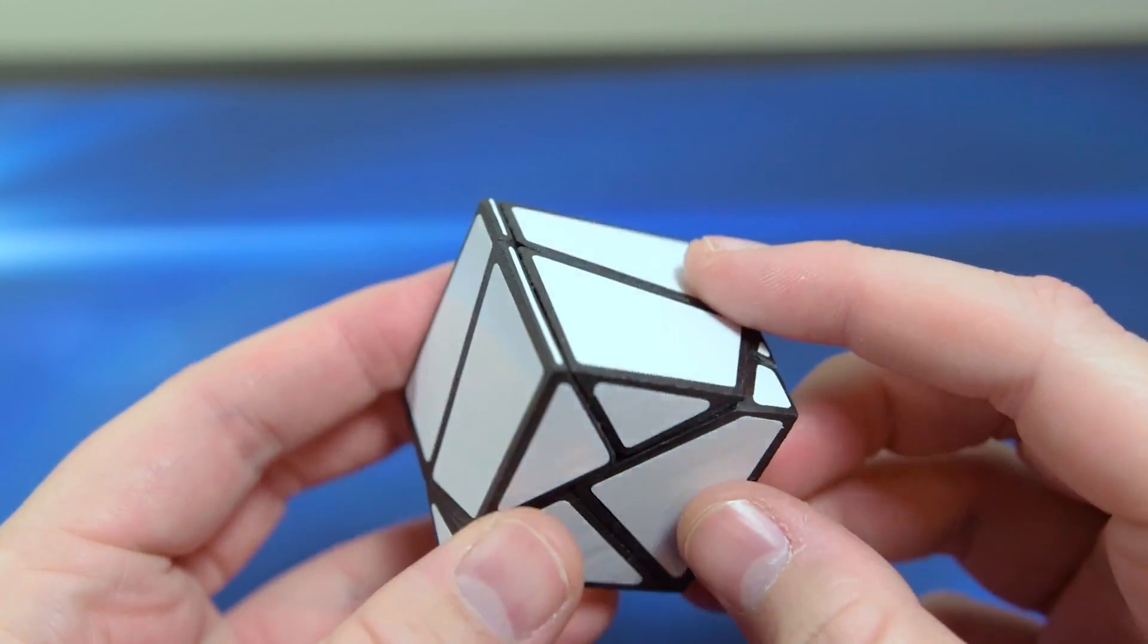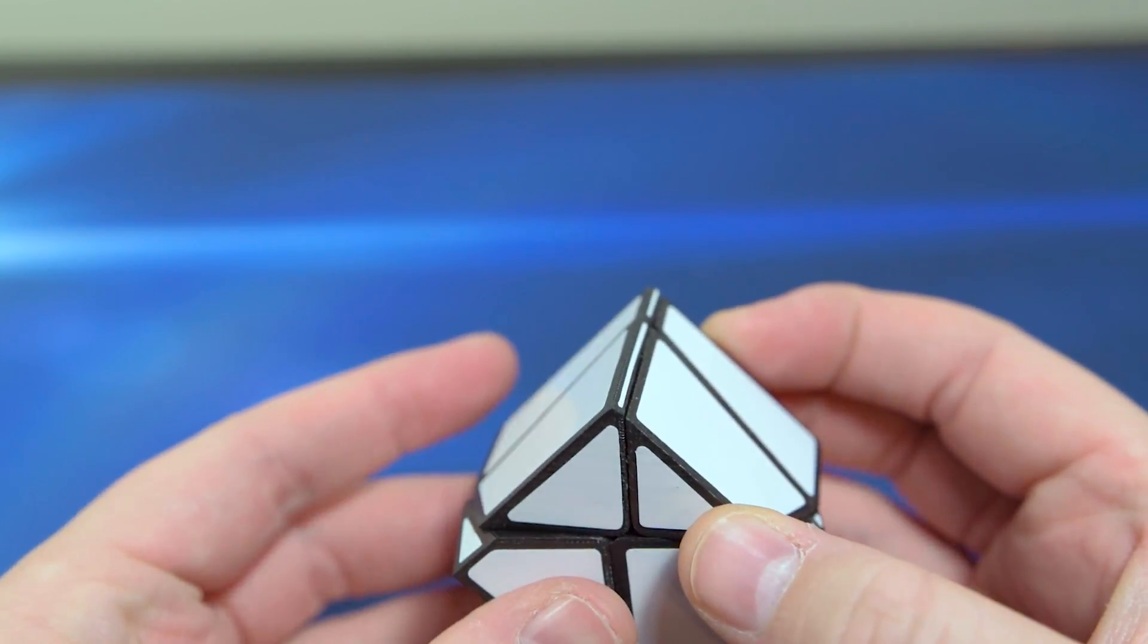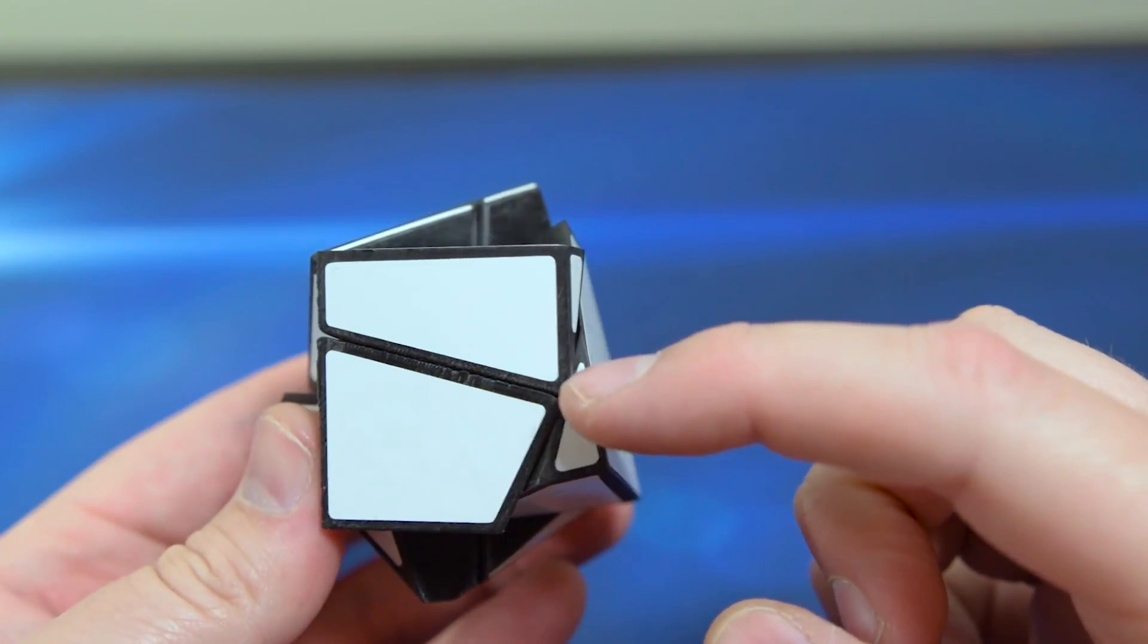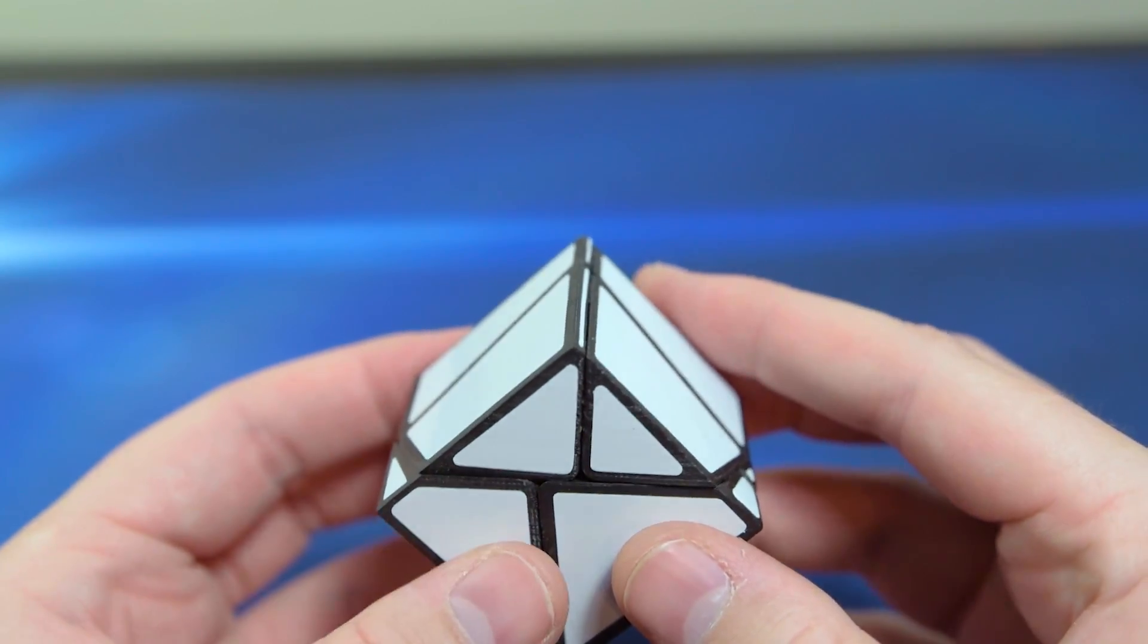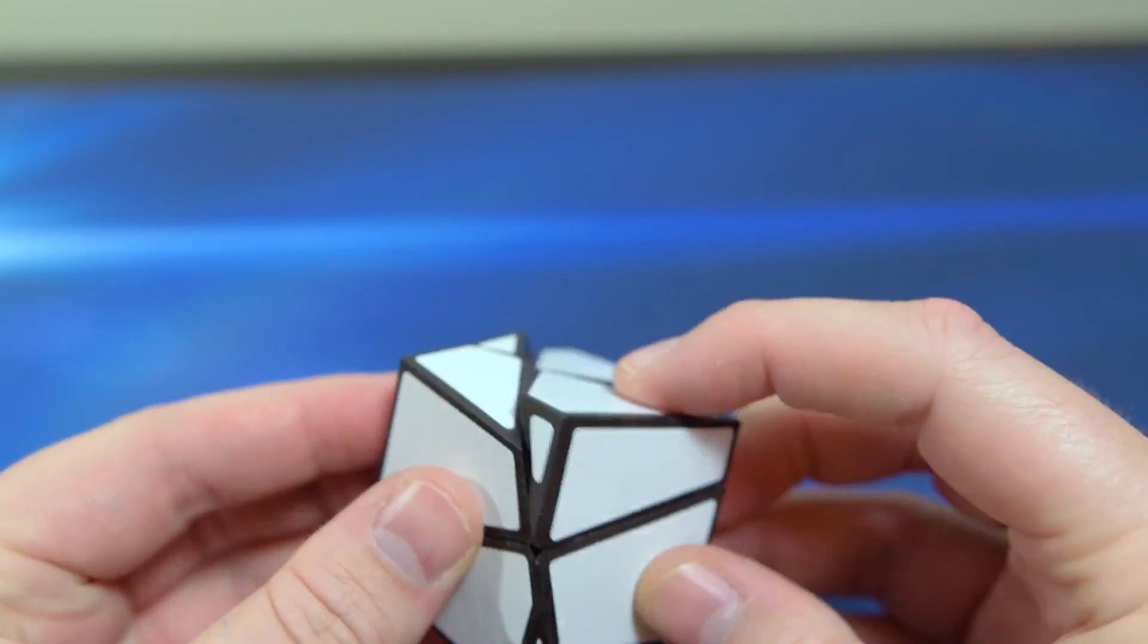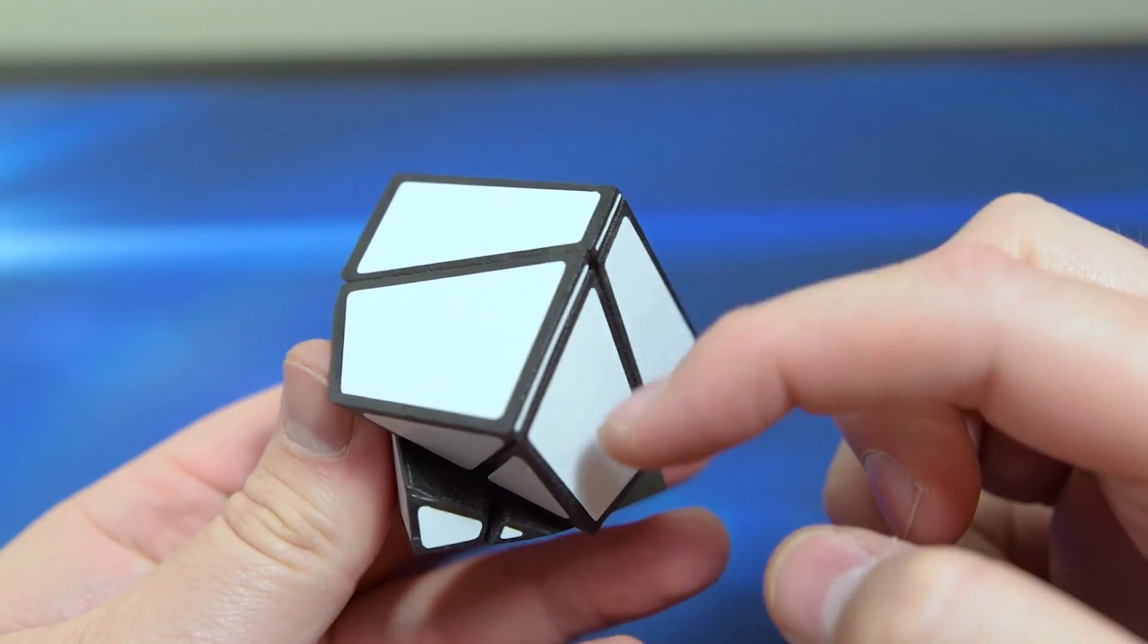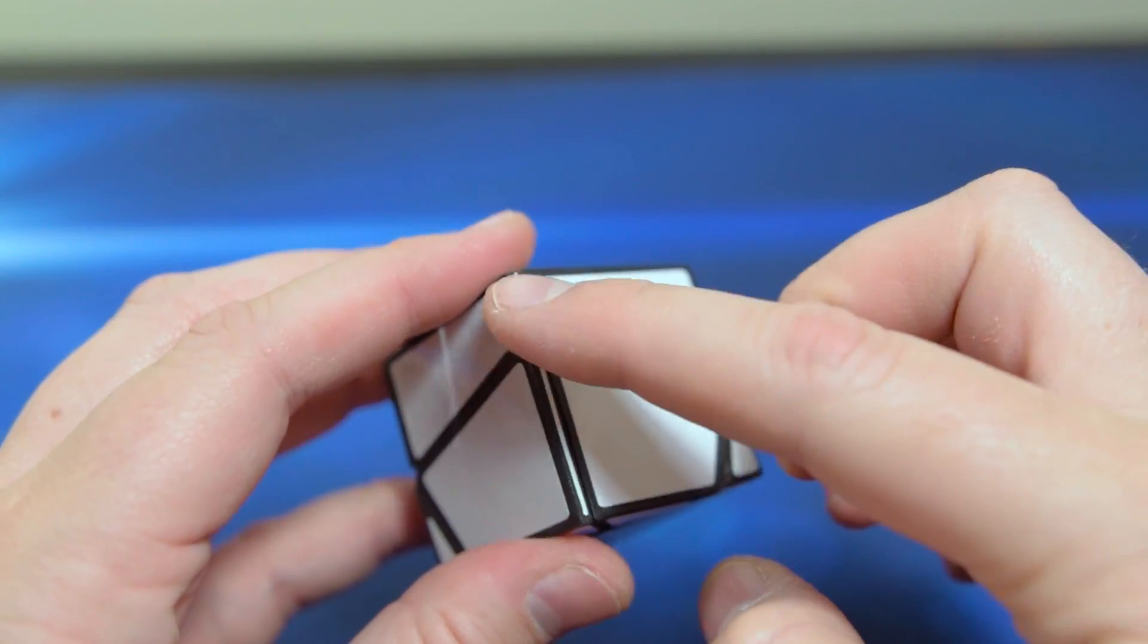Before we do some turns, let's take a look and see how we're going to solve it. I don't want to get caught solving this side because it doesn't really line up when it's solved. I want to solve one of these two sides - I think that would be easiest because these will line up and I'll know that a side is done. These are going to be really easy to recognize, so I'll probably start with this side.